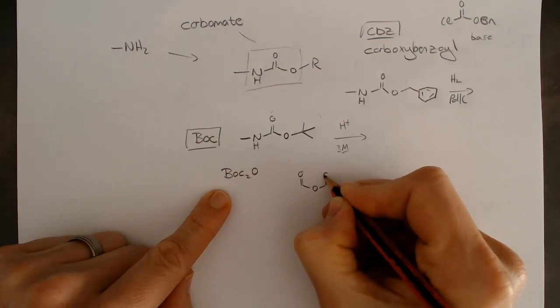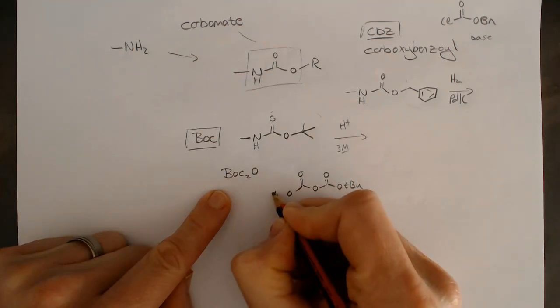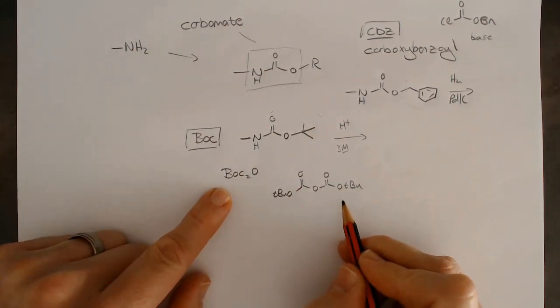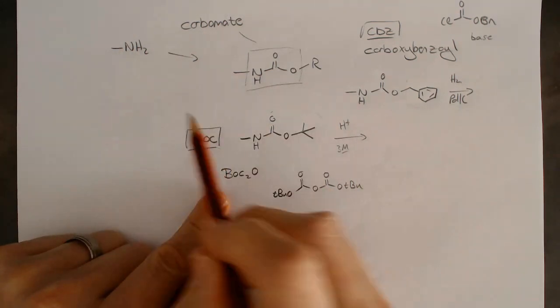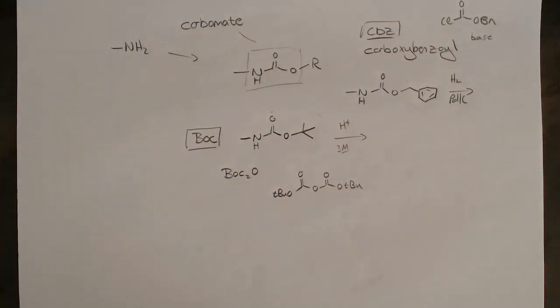We have two BOC groups. It's O-tert-butyl and O-tert-butyl like that. That's BOC anhydride. It is, however, a really facile, easy reaction to do. It reacts with an amine because that's a fantastic nucleophile, and it's very easy to put the BOC group on.